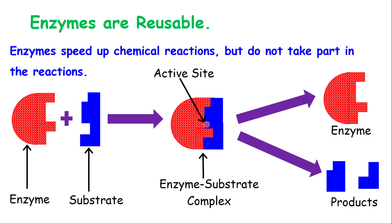Where the enzyme and the substrate meet to create a reaction is called the active site. Once they are joined at that point for the chemical reaction to take place, it's called the active site. At the end, when the substrate breaks down in catabolic reactions, you get the products — whatever the substrate breaks down into is called the products. And you get the exact same enzyme at the end. The only thing that changes is the substrate. Enzymes are able to be reused because they do not break down, neither do they take part in the chemical reaction.